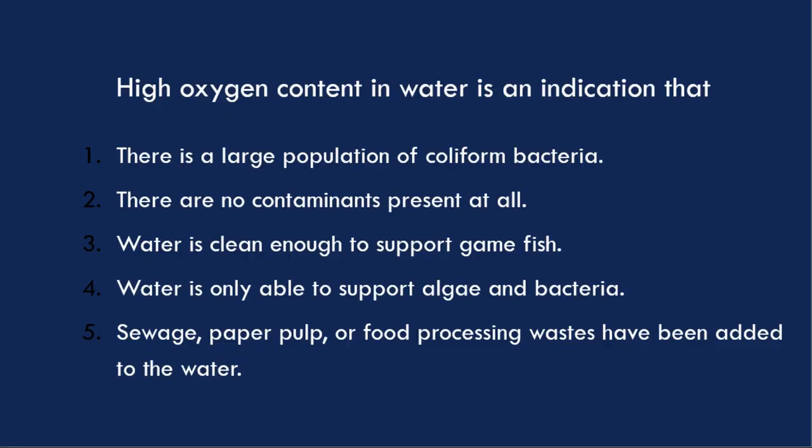That is eutrophication. High oxygen content in water indicates the water is clean enough to support game fish — that is the correct answer. When you have high oxygen content, you have a healthy fish population. If you put organic waste with nitrogen and phosphorus sources into water, you start to have eutrophication, or at the very least lots of bacteria. You get an oxygen sag, and fish kills occur.